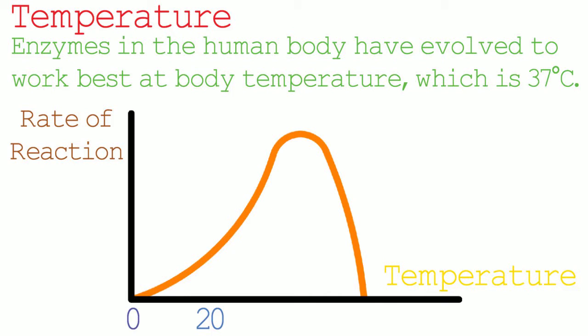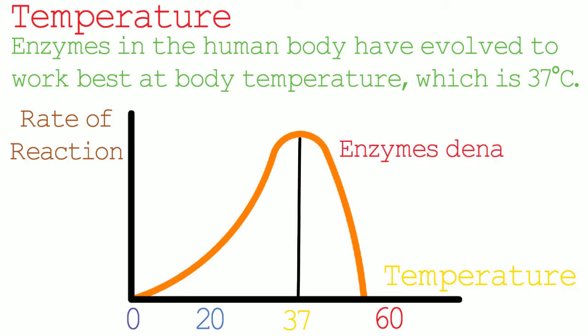The rate of reaction will continue to increase until the optimal temperature, which is 37 degrees. When the temperature rises above 37 degrees, the proteins that the enzymes are made up from start to break down because of the excessive heat. This process is known as denaturing and usually starts to occur when temperatures exceed 40 degrees. We can see from the graph that the fall in rate of reaction is quite significant when the temperature rises above 40 degrees.